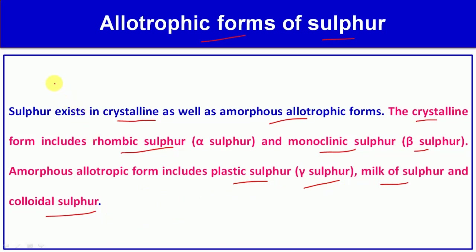First, we are going to discuss the crystalline allotrophic forms of sulfur. Two types are rhombic sulfur and monoclinic sulfur.